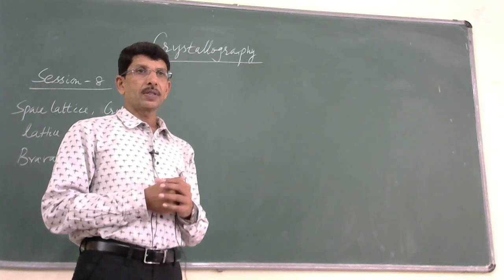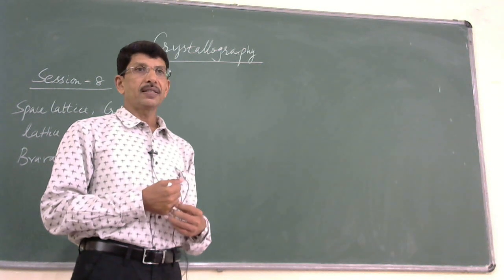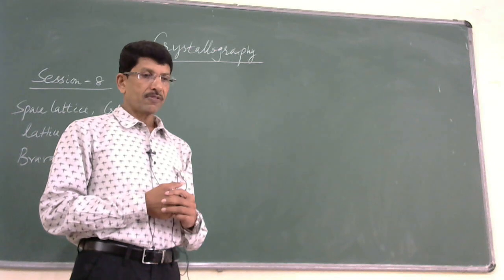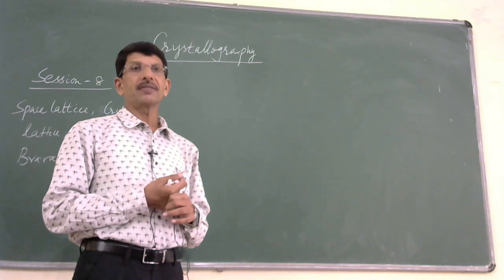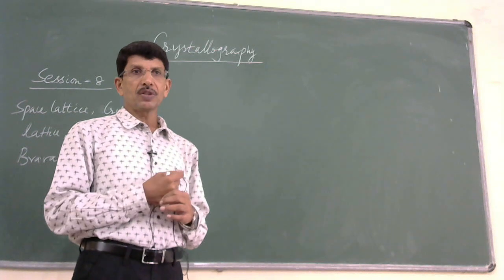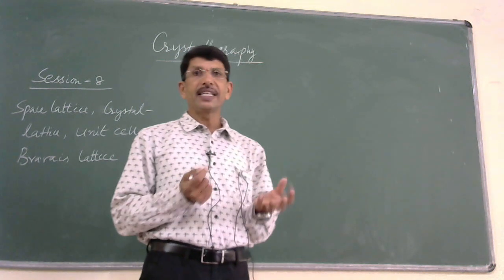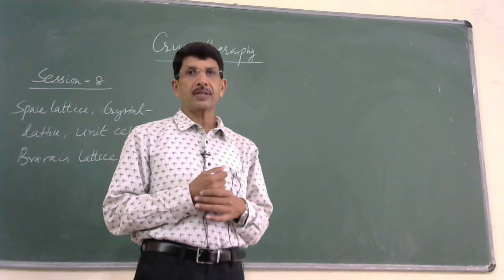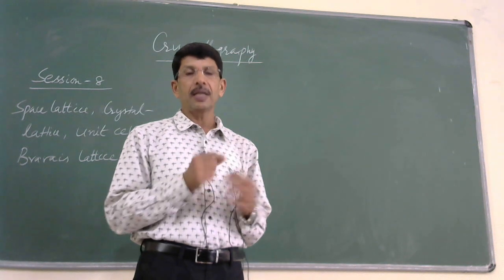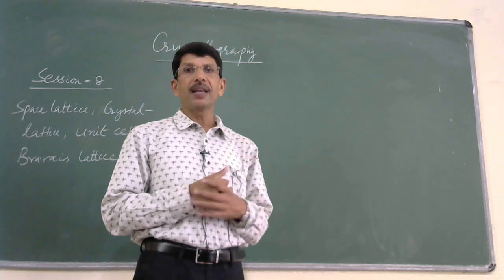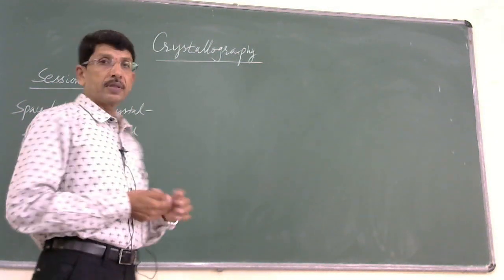Good morning. In the last session I discussed about the Miller indices, and we learned that Miller indices are used to designate every plane in a crystal. In the last class I also showed you how to designate all six faces of a cubic crystal, which are identical to one another. Despite their identical nature, it is possible to distinguish each face with the help of Miller indices.